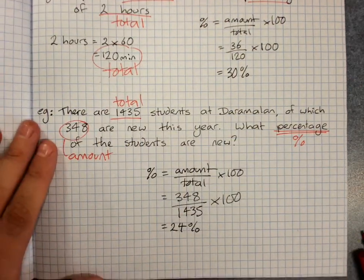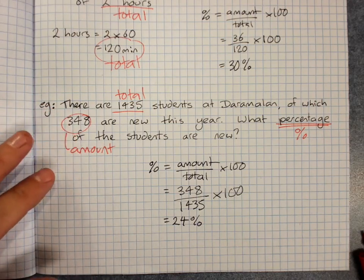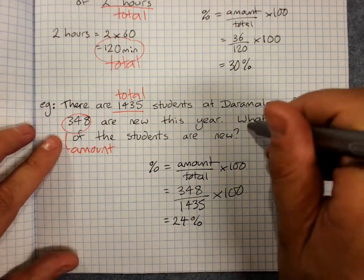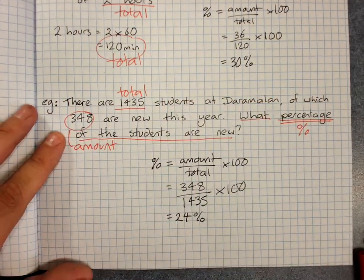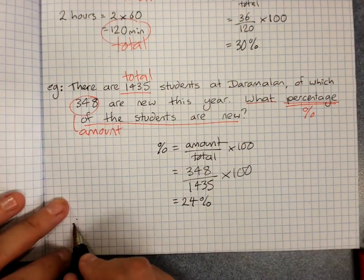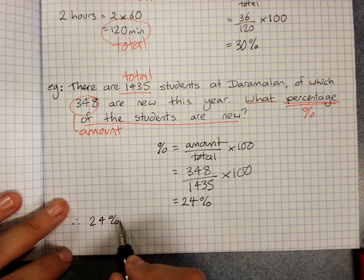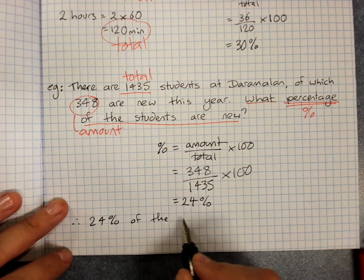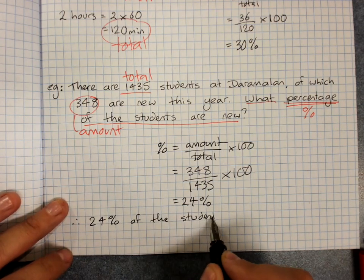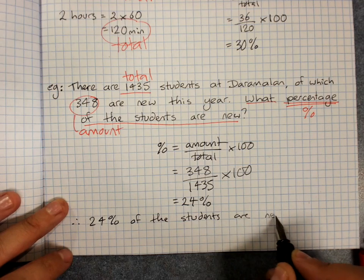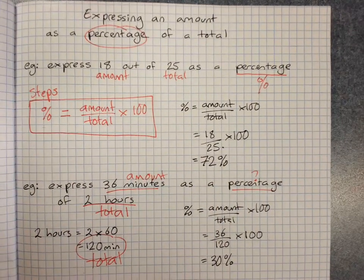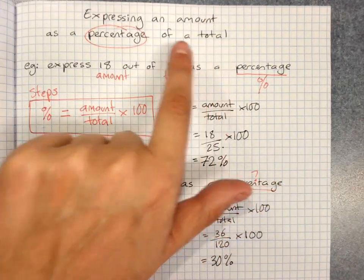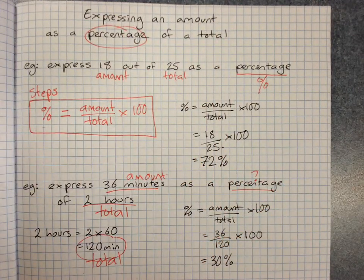And because it was a word question, we identify the question: what percentage of the students are new? And I answer it: therefore 24% of the students are new. There we go, how to find an amount out of a total as a percentage.